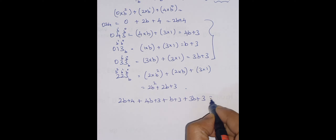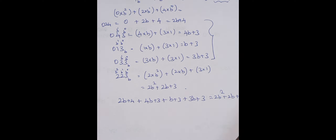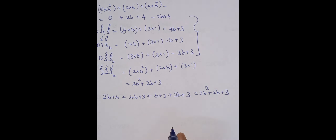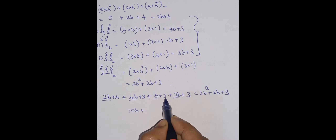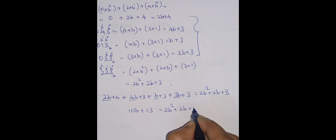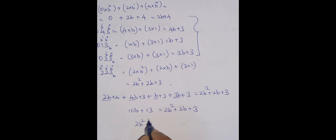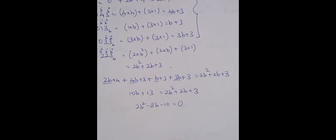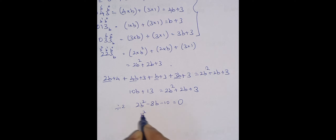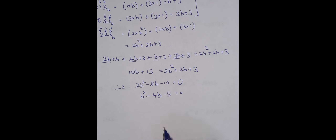Now adding all four left-hand side terms and equating: (2b + 4) + (4b + 3) + (b + 3) + (3b + 3) = 2b squared plus 2b plus 3. Adding the b terms: 2b + 4b + b + 3b = 10b, and constants: 4 + 3 + 3 + 3 = 13. So 10b + 13 = 2b squared + 2b + 3. Simplifying gives 2b squared minus 8b minus 10 = 0.